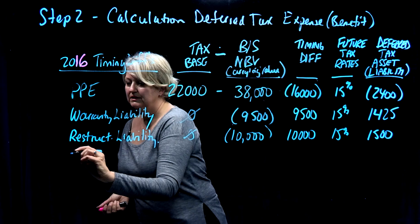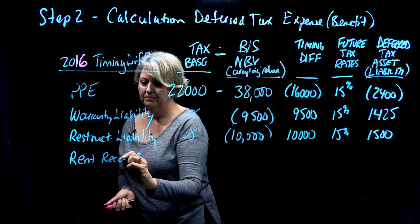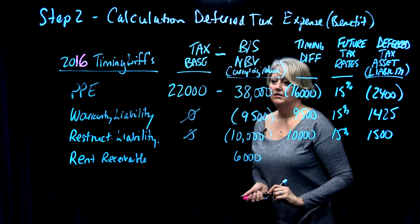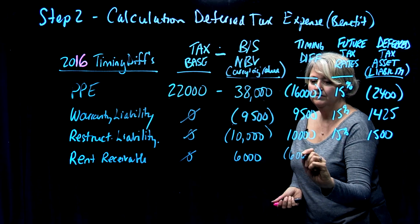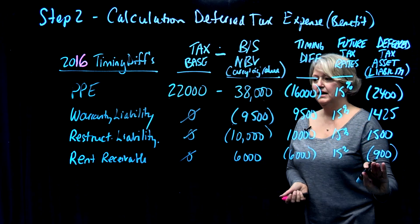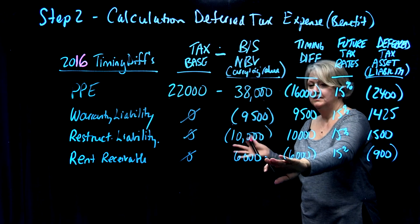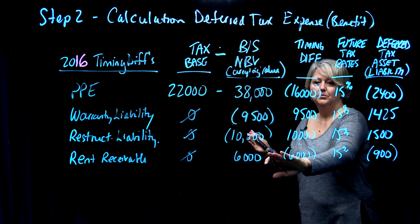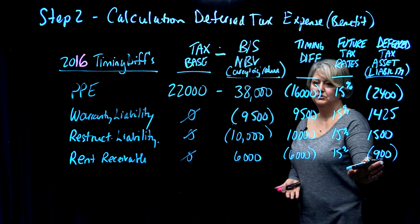The fourth timing difference is our rent receivable. We had accrued rent of $6,000 sitting as a receivable on our balance sheet, but nothing accrued for tax purposes. Zero minus positive $6,000 creates a negative timing difference of $6,000, and $6,000 times 15% equals a deferred tax liability of $900. That makes sense because next year when we collect the money from our tenant, we'll have to pay tax on it.